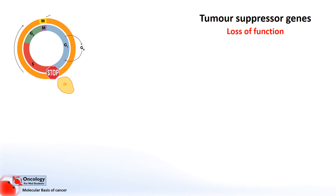The best example for showing how tumour suppressor genes are involved in the formation of cancers is the retinoblastoma gene. Retinoblastoma is a cancerous tumour of the retina — the layer of cells at the back of the eye responsible for detecting light. One of the tumour suppressor genes involved in its development has been named after it: the retinoblastoma gene. To understand what's going on we need to have a look at what's happening inside the cell at the G1 checkpoint.